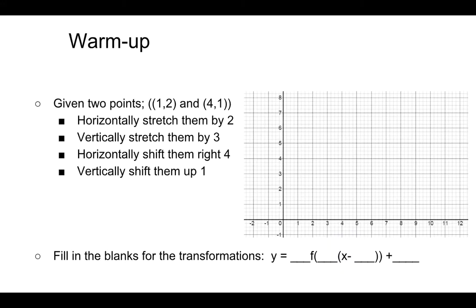We're going to start with two points. You've got two points, and we're going to put them on a little table and put them on the graph as well. The points are (1, 2) and (4, 1). These are not points from a base function, but this is going to basically show you just with two points exactly how to do transformations.